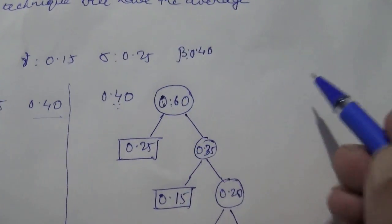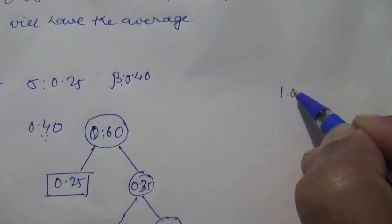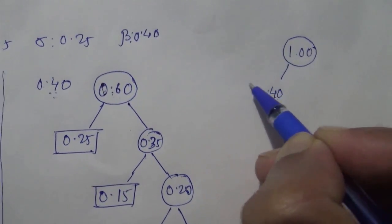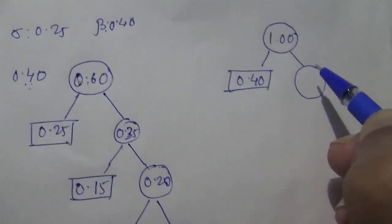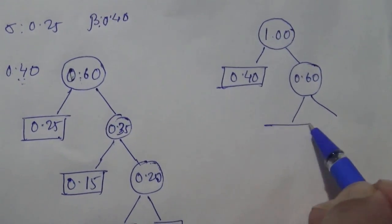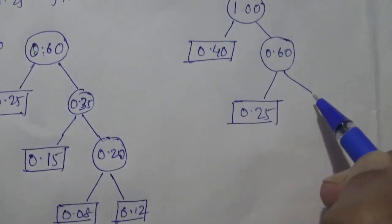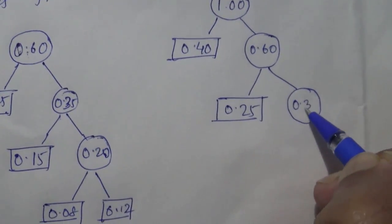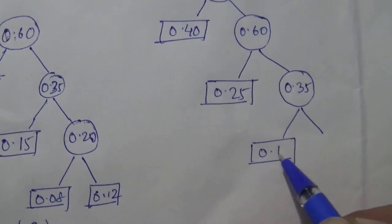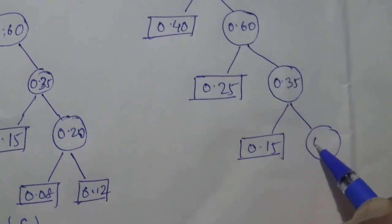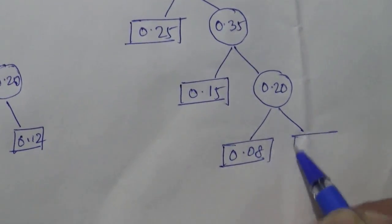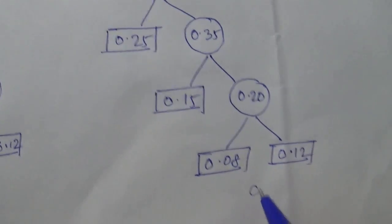Add these two remaining values and you will get 1.00. So 1.00 is derived from 0.40 on the left-hand side and 0.60 on the right-hand side. Again, 0.60 came from 0.25 and 0.35; 0.35 from 0.15 and 0.20; and 0.20 from 0.08 and 0.12. This is your Figure D — the complete Huffman tree.